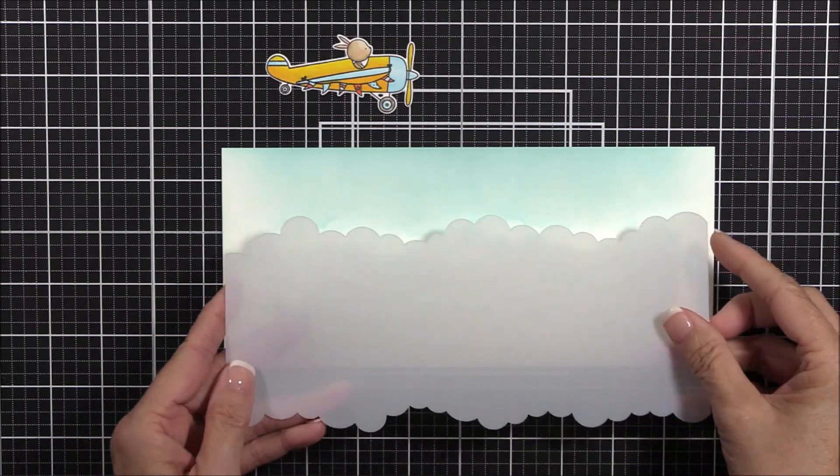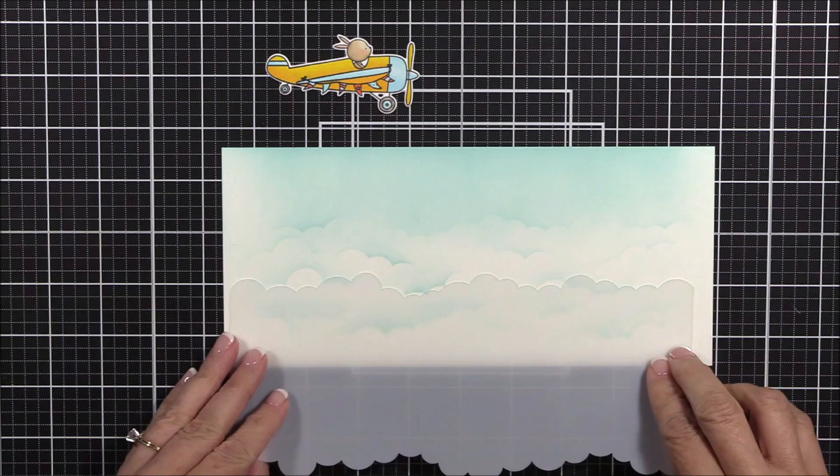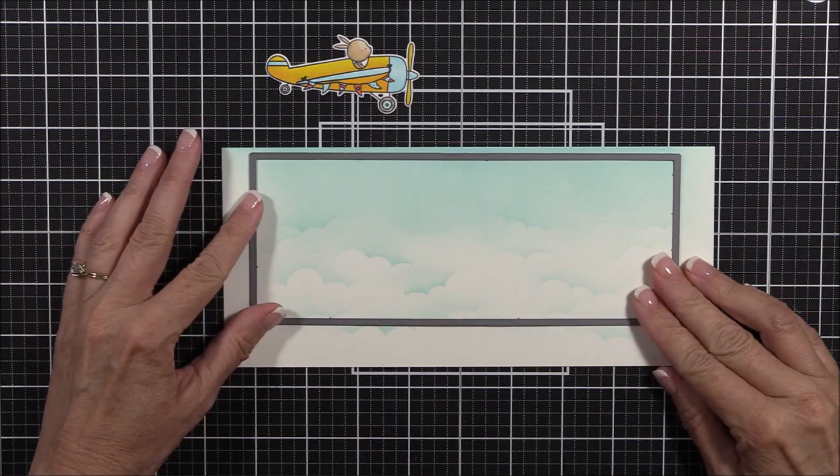I started off by ink blending some fluffy clouds onto a 4-inch by 7-inch smooth white panel using the Slimline Cloud Edges Stencil and some Summer Splash Dye Ink.